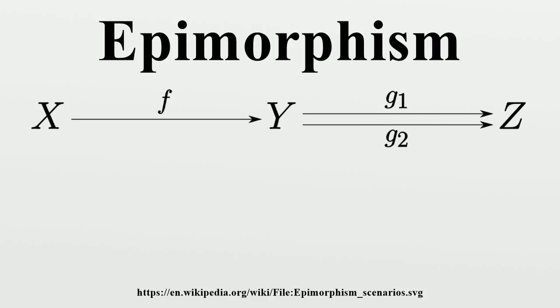In a topos, a map that is both a monic morphism and an epimorphism is an isomorphism. The composition of two epimorphisms is again an epimorphism. If the composition f∘g of two morphisms is an epimorphism, then f must be an epimorphism.